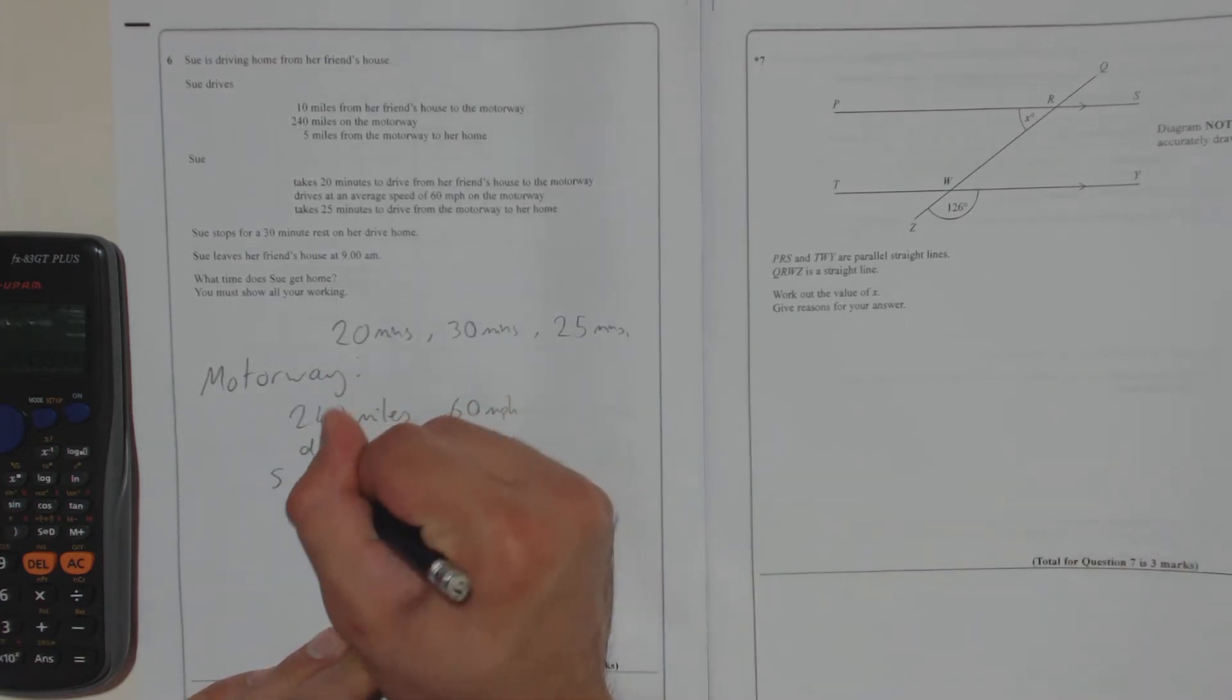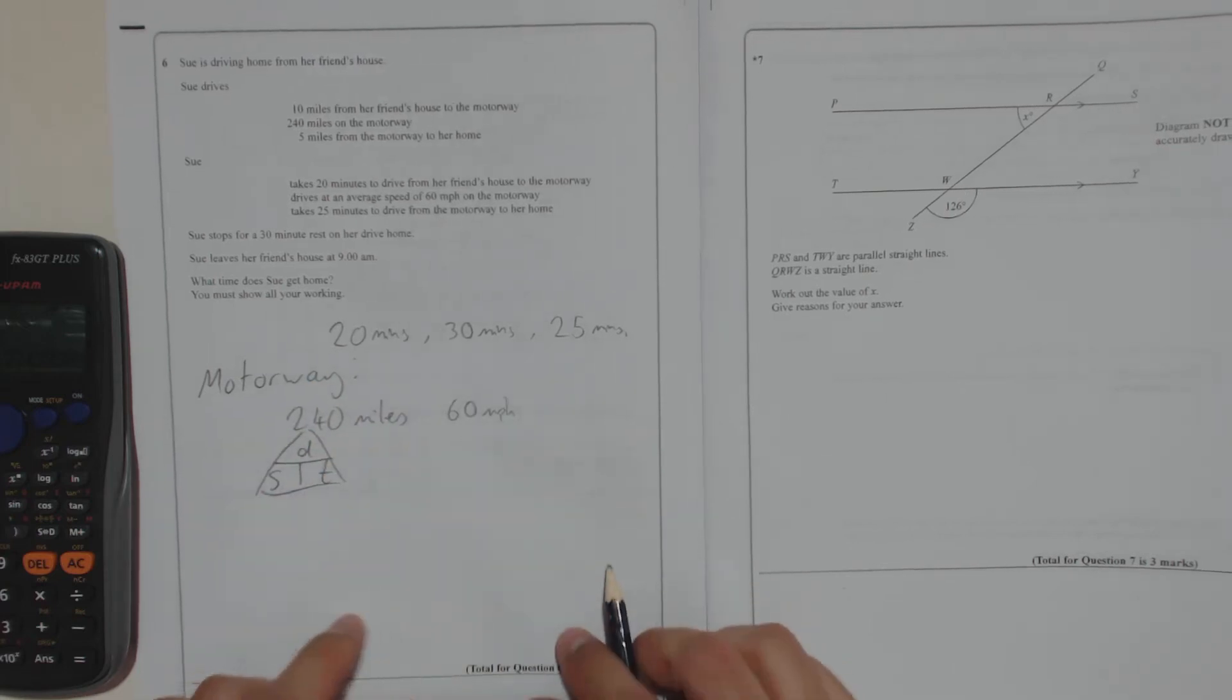So we want to know the time. You cover it up. Speed equals distance over time. Time equals distance over speed.